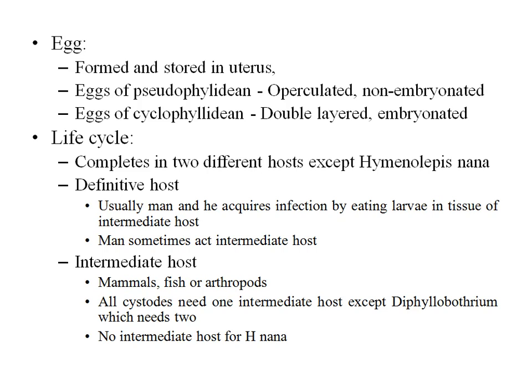The life cycle is usually completed in two different hosts, except for Hymenolepis nana which requires only one host. The definitive host is usually man, who acquires infection by eating larvae in the tissue of the intermediate host. Man can sometimes act as an accidental or dead-end host. Intermediate hosts are mammals, fish, or arthropods. All cestodes need one intermediate host except Diphyllobothrium, which requires two intermediate hosts.